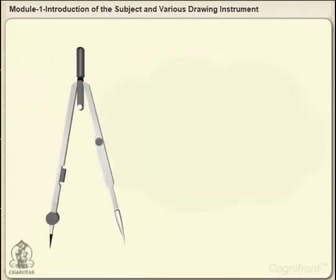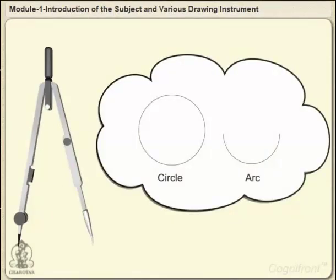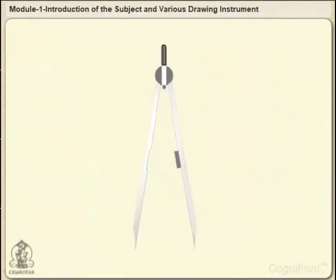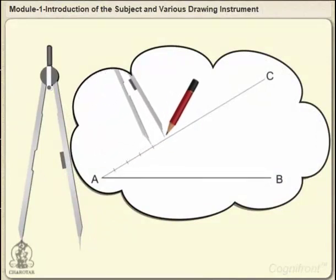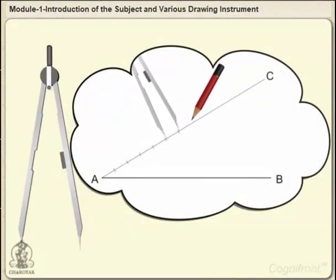As you already know, the compass is used for drawing circles and arcs. The divider is a little different with both legs made of steel and is used for transferring distances.